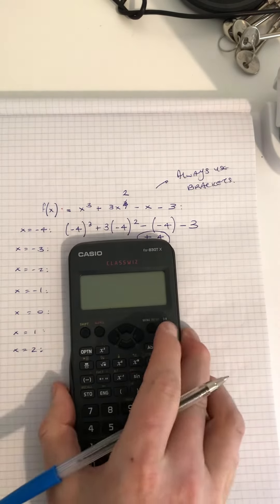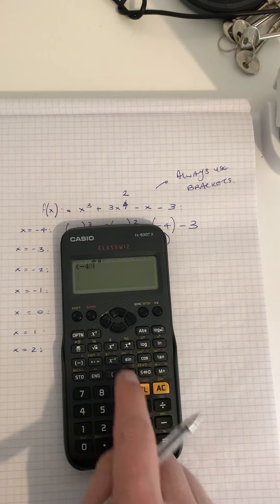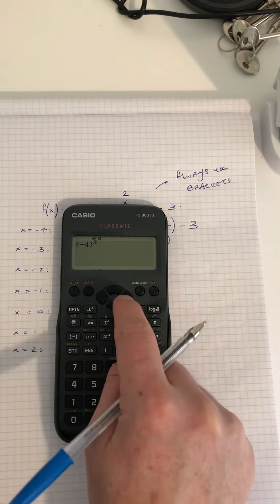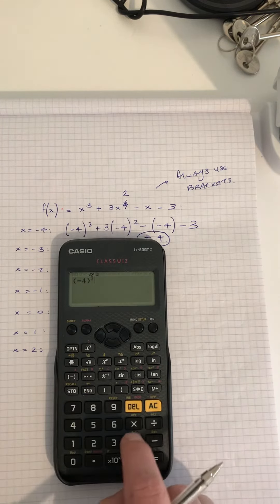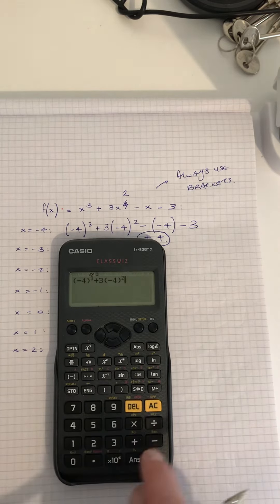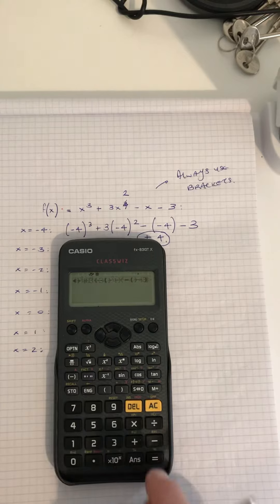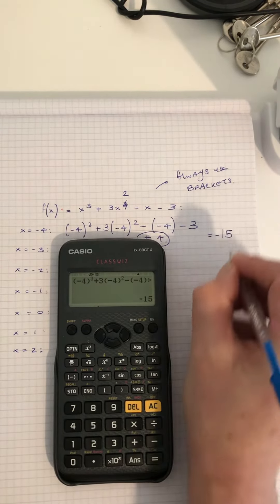You type in on your calculator bracket minus 4, close the bracket, to the power of 3, plus 3, bracket minus 4 squared, minus bracket minus 4 minus 3 equals, and you get minus 15.